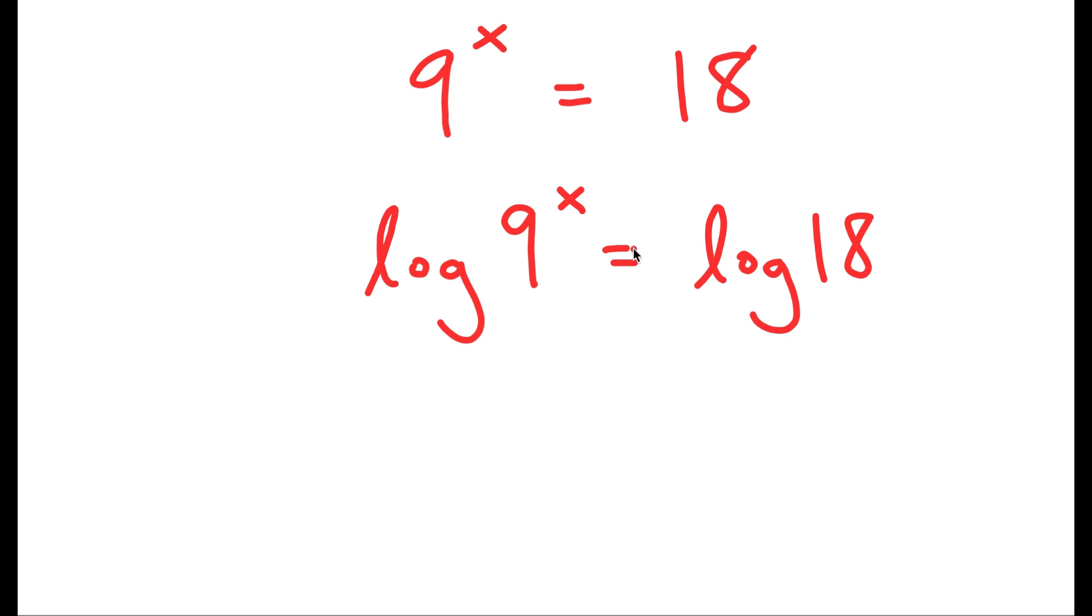Now from here, I can use the property log of a to the power of b is equal to b times log a. So I can essentially move this b to the front.